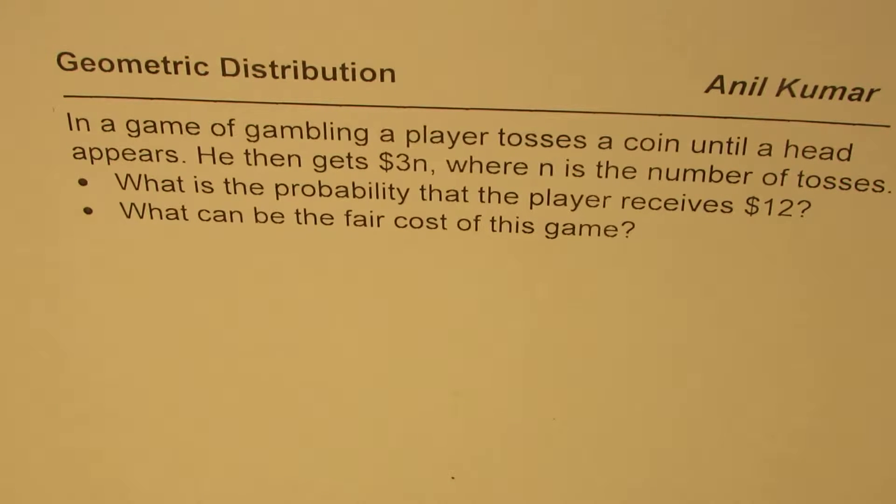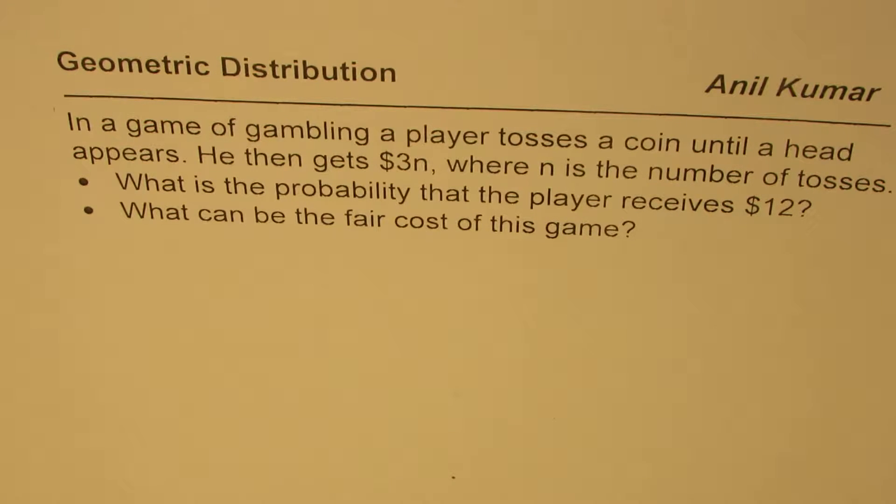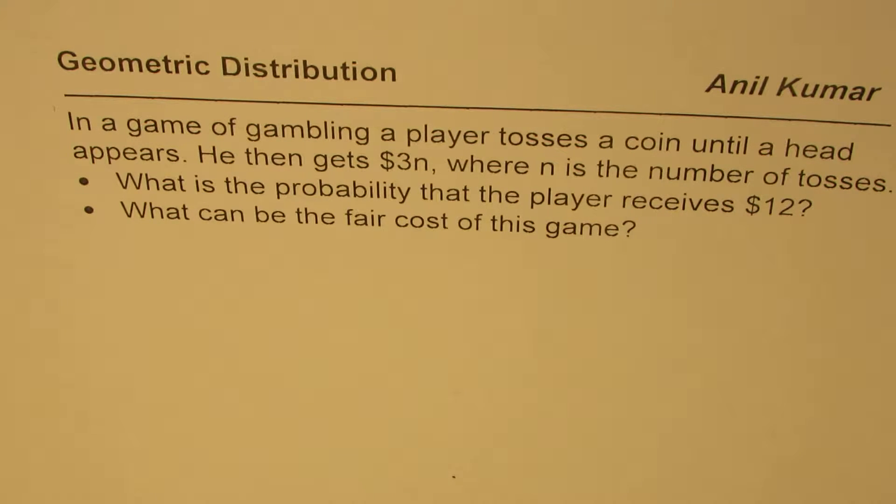I am Anil Kumar sharing with you an excellent question on geometric distribution. In a game of gambling, a player tosses a coin until a head appears. He then gets $3n where n is the number of tosses. What is the probability that the player receives $12? What can be the fair cost of this game?